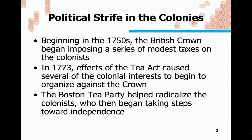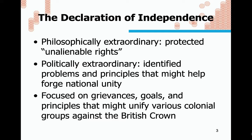There was a lot of political strife beginning in the 1750s. The British crown began imposing taxes on the colonists; the Tea Act caused several colonial interests to begin organizing against the crown. The Boston Tea Party helped radicalize the colonists, who moved toward a Declaration of Independence — philosophically extraordinary at the time, the first document of its kind advocating for the protection of unalienable rights of citizens. It identified problems and principles that might forge national unity.